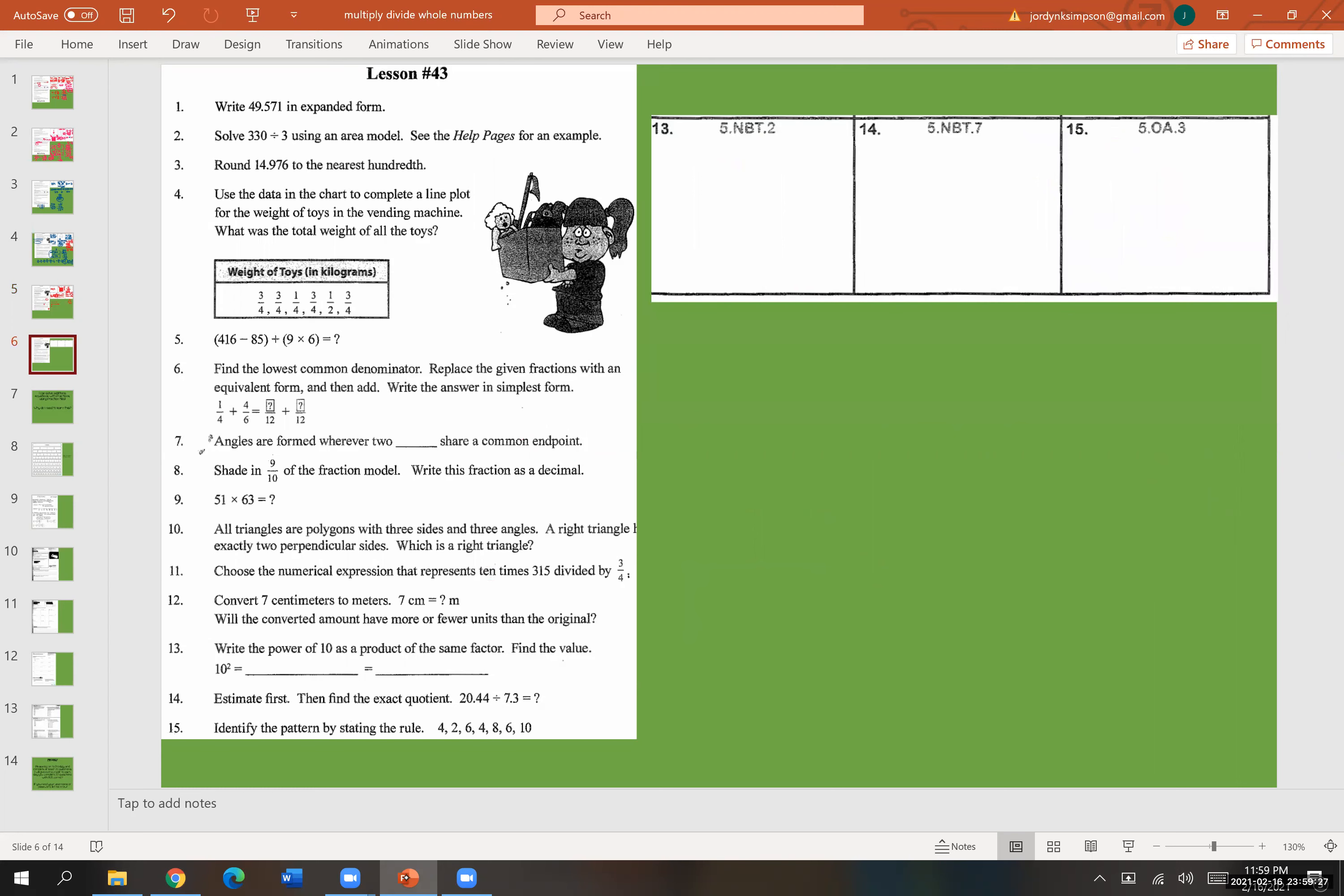Let's go ahead and do number 13, 14, 15. Number 13, we want to write the power of 10 as a product of the same factor. Find the value. So remember the first blank needs to be a multiplication equation. And the last one is just give me the product. So we have 10 squared or 10 to the second power. So 10 is the number I'm multiplying. Two is the number of times I will be multiplying that number. So this would be 10 times 10. What is 10 times 10? Well, that's 100. So I need 10 times 10 and 100 in the box.